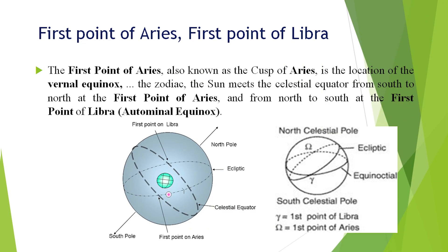The first point of Aries, also known as the cusp of Aries, is the location of the vernal equinox. In the diagram you can see the ecliptic line and celestial equator. The red point denotes the sun — when it moves from east to west, it cuts the ecliptic at the omega point, called the first point of Aries. When it meets the southern region, it cuts the ecliptic at the delta point, called the first point of Libra.